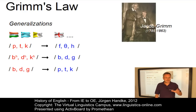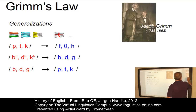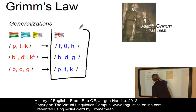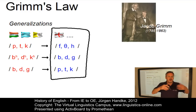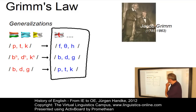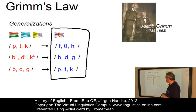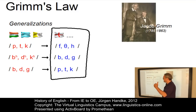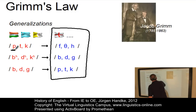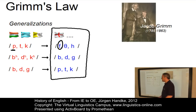Grimm's Law, also known as the first consonantal shift, shows that a regular shifting of consonants separated the Germanic languages — such as English or German on the one hand — from the other Indo-European languages such as Sanskrit, Greek or Latin. Let's take the voiceless bilabial plosive in Sanskrit, Greek or Latin in words such as 'piter,' 'pater' and 'pater.' The result in the Germanic language is a labiodental fricative, such as in English 'father' or German 'Vater.'